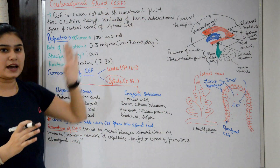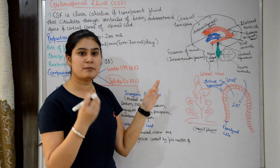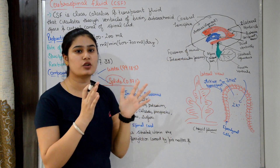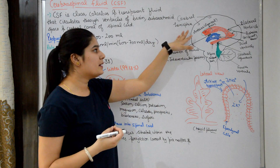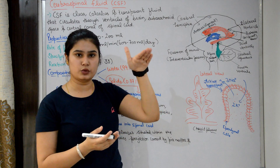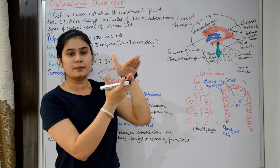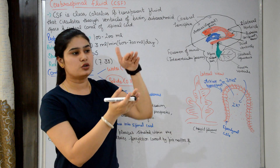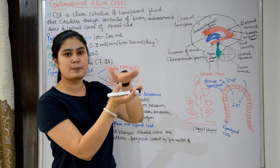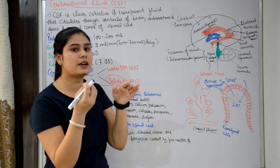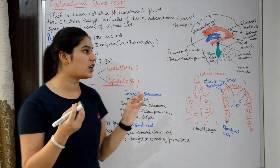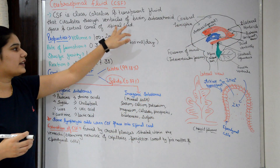The subarachnoid space is related to the meninges, which are the protective layers covering the brain and spinal cord. Meninges consist of three layers: the outermost is the dura mater, the middle is the arachnoid mater, and the innermost is the pia mater. The space between the arachnoid mater and the pia mater is called the subarachnoid space, where CSF flows. From the fourth ventricle, CSF also enters the central canal of the spinal cord.